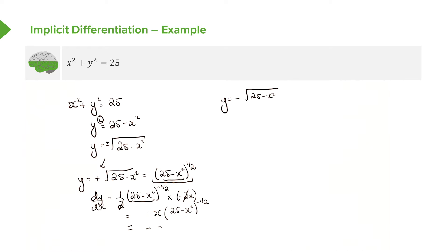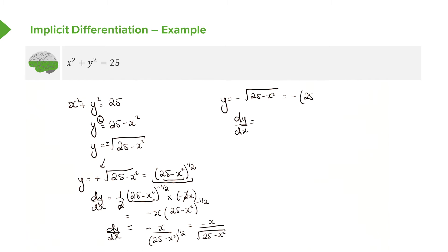We can rewrite that as dy/dx = −x / √(25 − x²), which is our gradient. For the negative case, y = −(25 − x²)^(1/2), applying the chain rule gives a minus times minus, making it positive: dy/dx = x / √(25 − x²). So we get two gradients — positive and negative — which we'll discuss shortly.